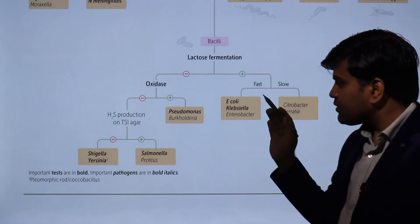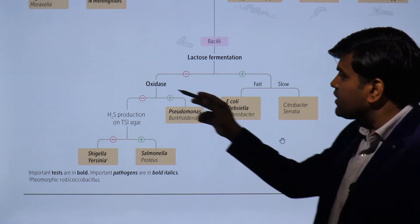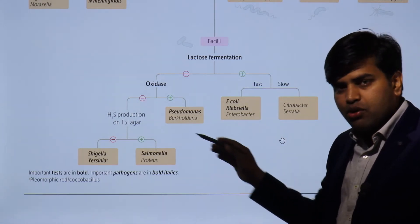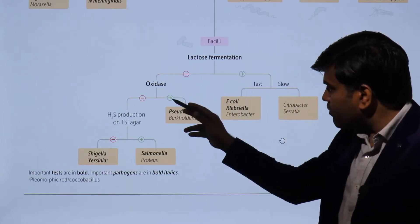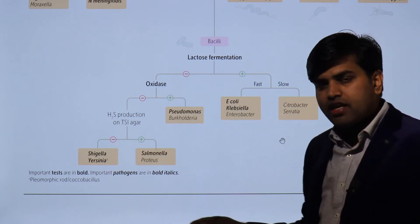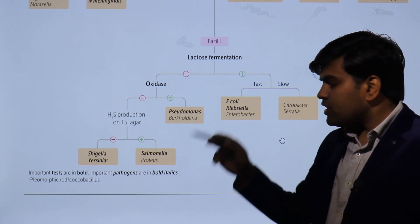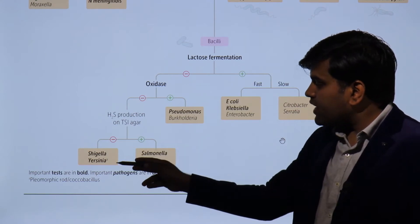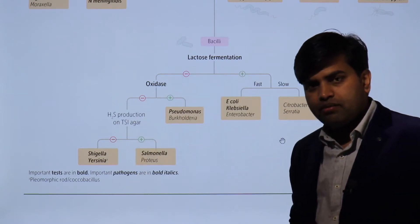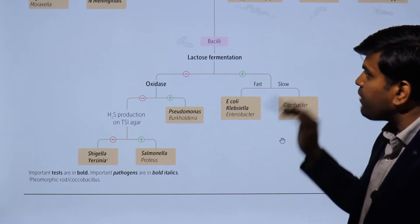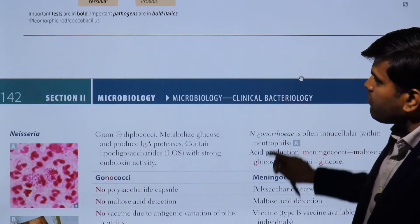Lactose non-fermenters appear pale or white in color and include Pseudomonas, Burkholderia, Salmonella, Proteus, Shigella, and Yersinia. These can be further divided by the oxidase test: Pseudomonas and Burkholderia are oxidase positive, whereas Salmonella, Proteus, Shigella, and Yersinia are oxidase negative. Among the oxidase-negative organisms, H2S production on TSI agar further differentiates them — Salmonella and Proteus produce H2S gas, while Shigella and Yersinia do not.